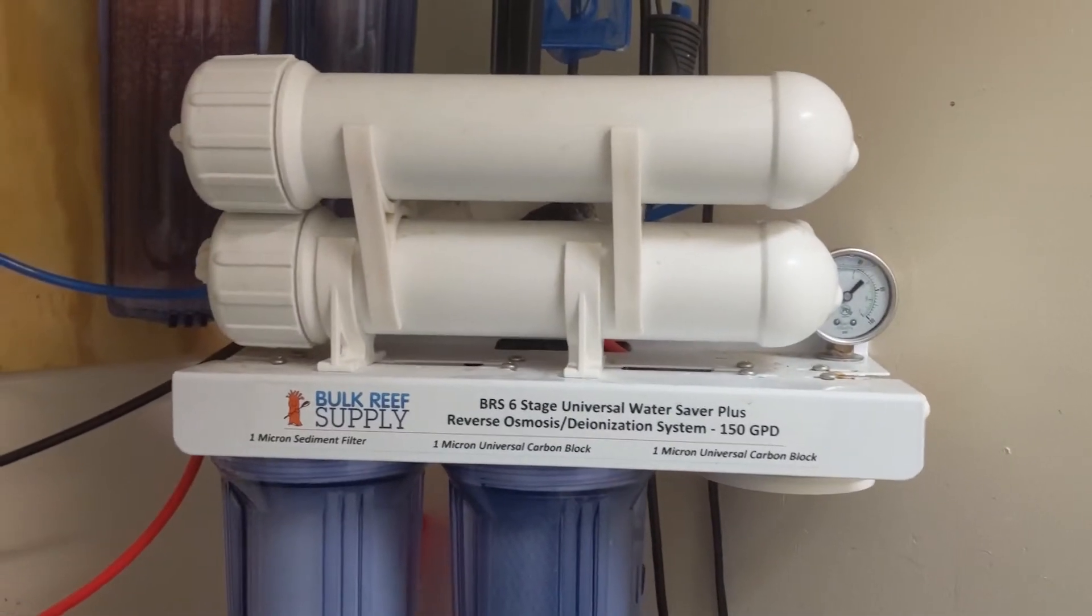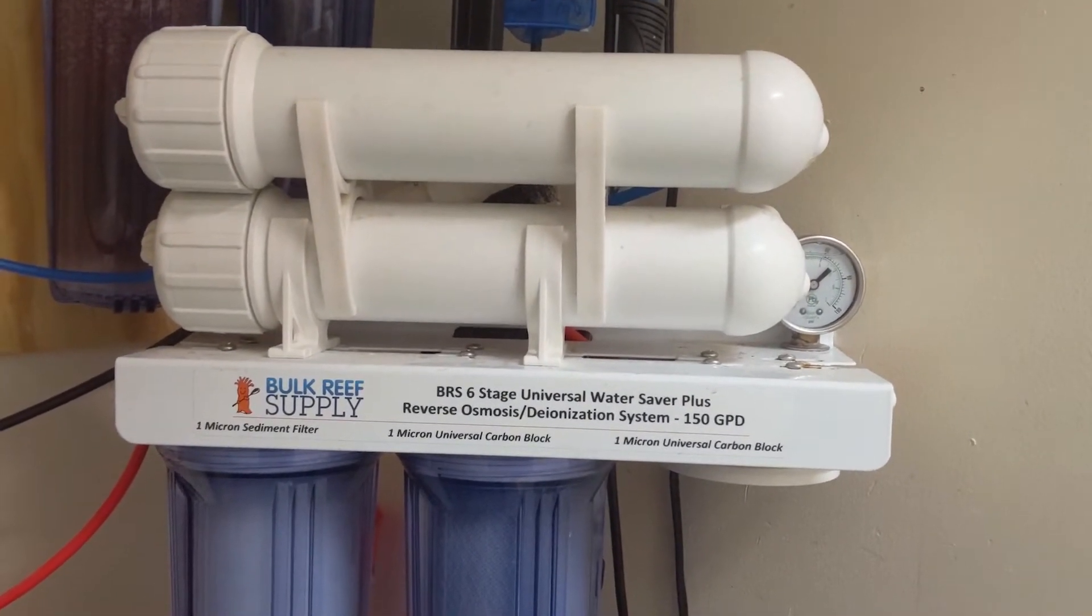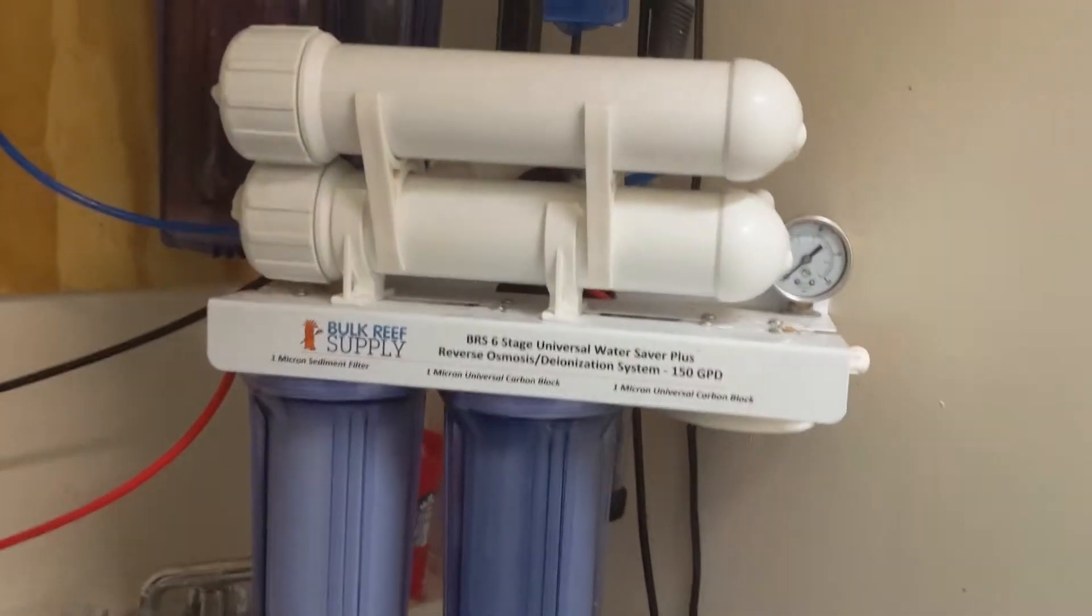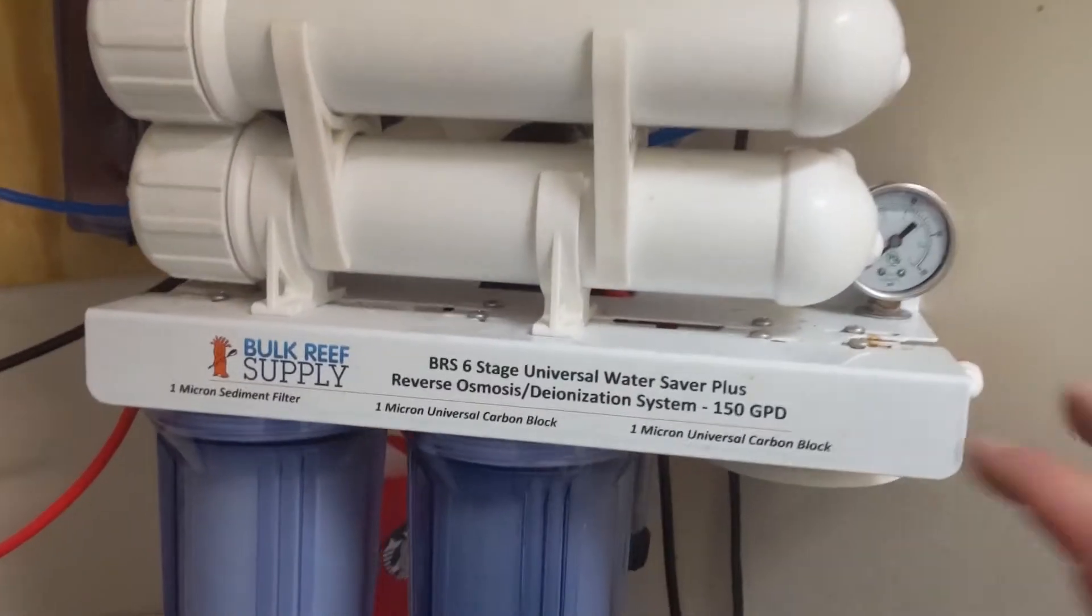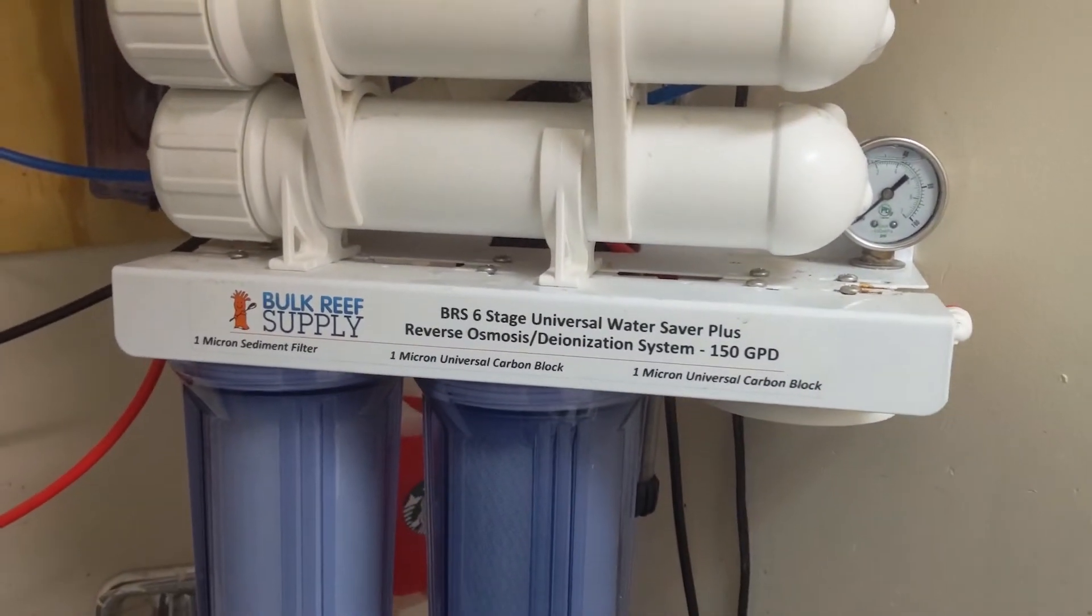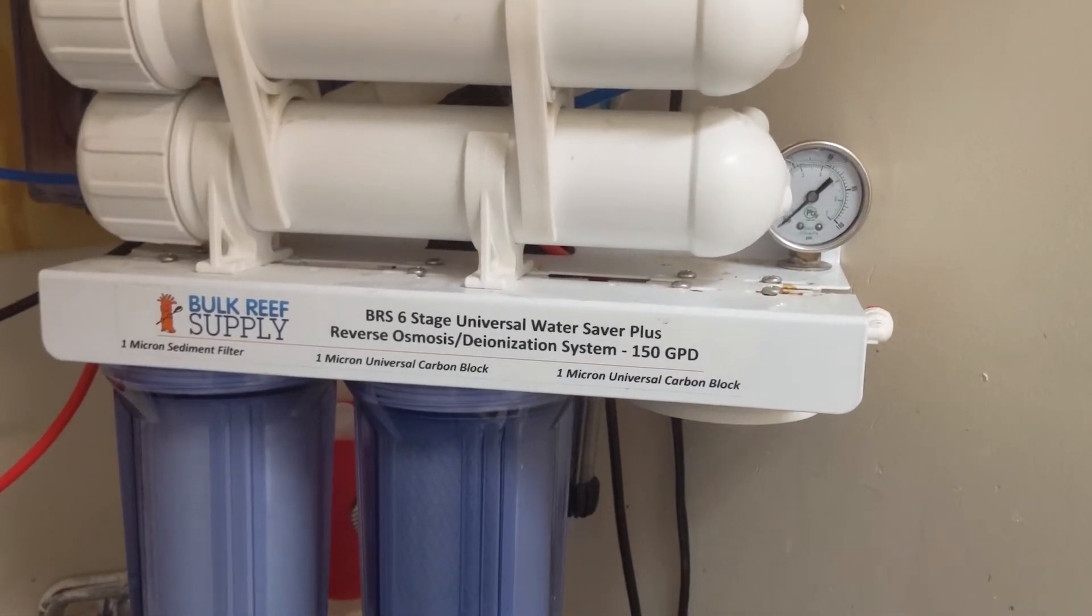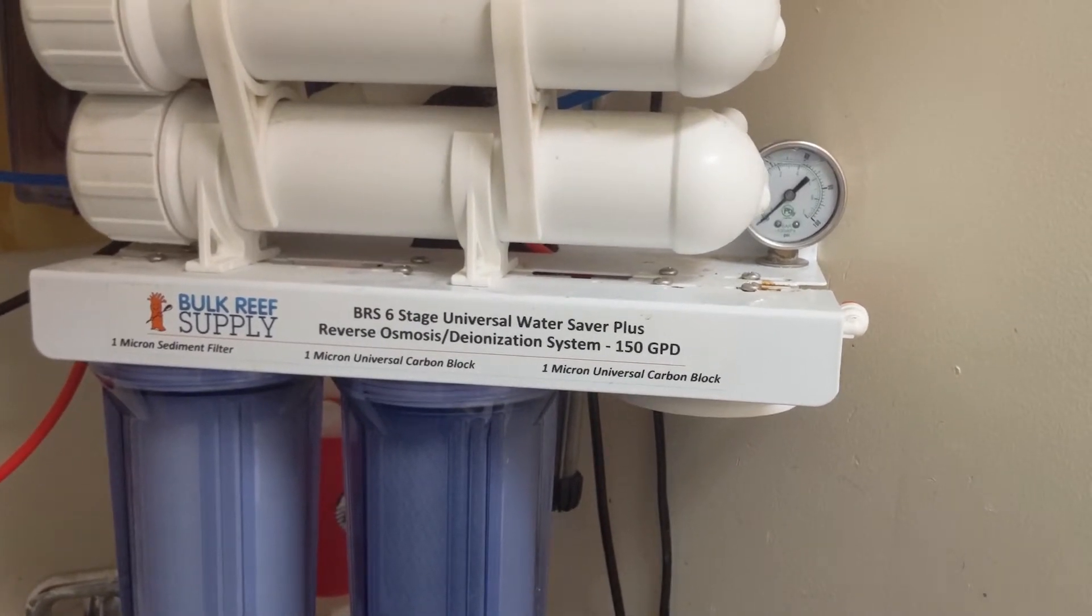Hey, it's Jason with my Bulk Reef Supply six-stage RODI filtration system. I use this for my large saltwater aquarium, which I've talked about before. This gives me a very low TDS water reading. Total dissolved solids is what TDS stands for, and with a reef tank you ideally want it at zero TDS.